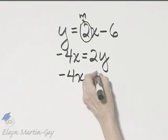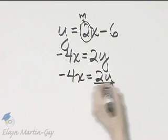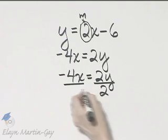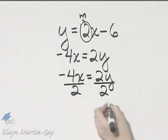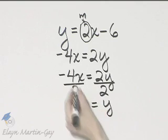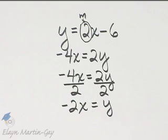To solve this second equation for y, I'll divide both sides by the coefficient of y, which is 2. The right side, I'll have y. The left side, I'll have negative 2x.